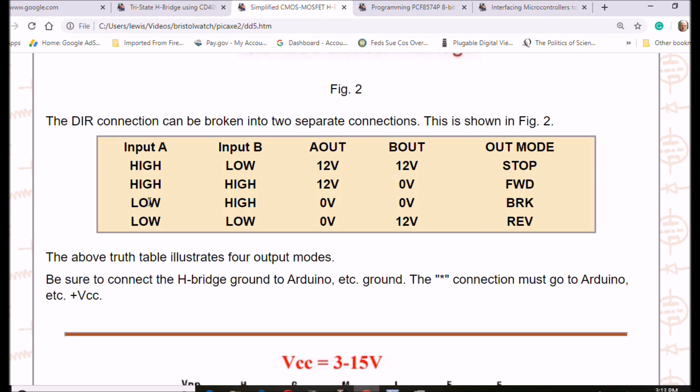Let's go again. If we have a low on A and high on B, it's going to be zero and zero. This is the brake mode. It's like it switches both sides of the motor connections to ground. And finally, low input A and low input B. It's going to be zero volts on A, it's going to be 12 volts on B out, and it's going to be in reverse.